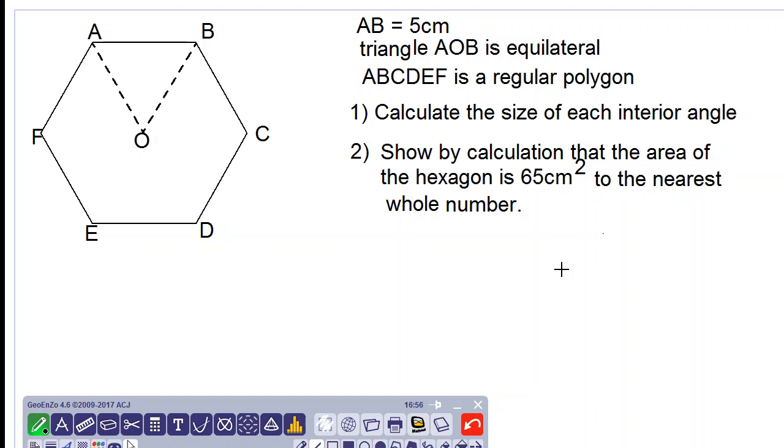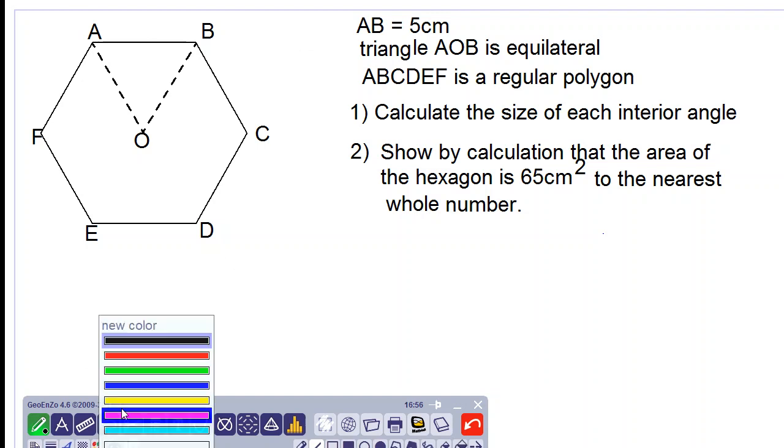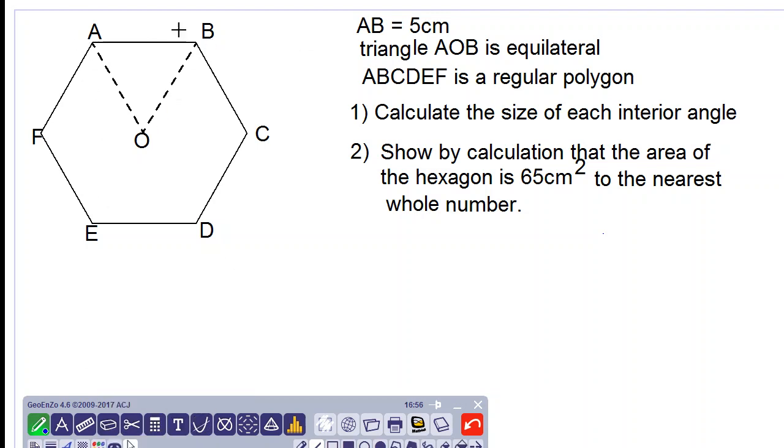Good day everyone, let's look at this polygon question. Number one: calculate the size of each interior angle. We know that the polygon is a regular polygon, that triangle AOB is equilateral, and that AB is equal to 5 centimeters. So we know the polygon is a hexagon because it has six sides.